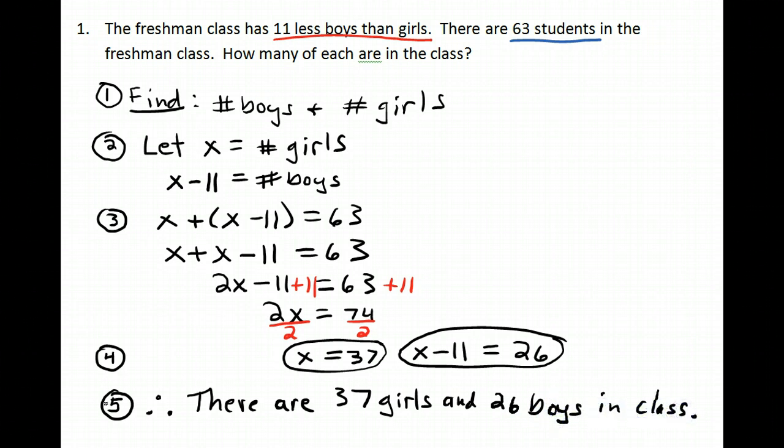Now, these three dots written in a triangle just stand for the word therefore. If you'd rather write the word therefore, that's fine.